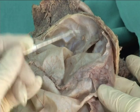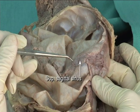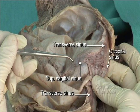Posteriorly, note where the superior sagittal sinus, transverse sinuses, and occipital sinus converge with the straight sinus at the confluence of sinuses.